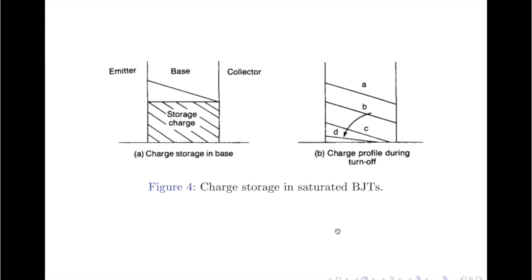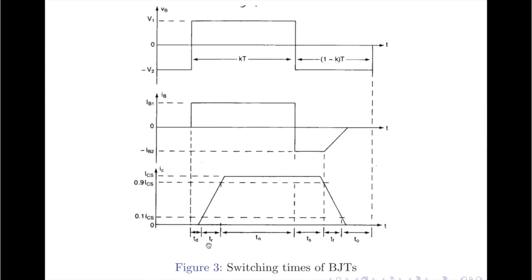To understand the concept of saturating charge, we use the diagrams shown in Figure 4. Figure 4a indicates the charge profile in the base region, and Figure 4b indicates the charge profile during turn-off. When the base current is reversed at the beginning of the storage time ts, the charge profile starts to change. During the duration of ts, the charge profile changes from A to C, and during the fall time tf, the charge storage changes from C to D. At the end of this transition, all excess charge carriers from the base region are completely eliminated.